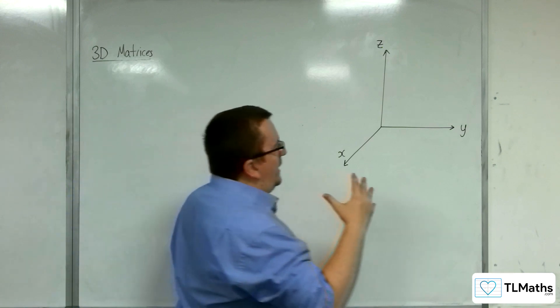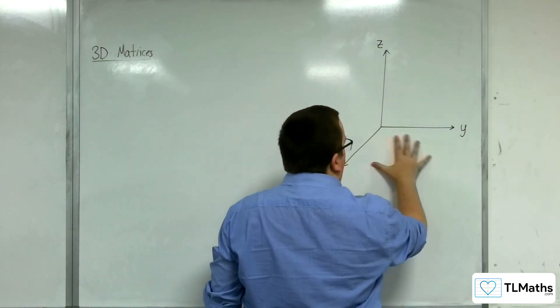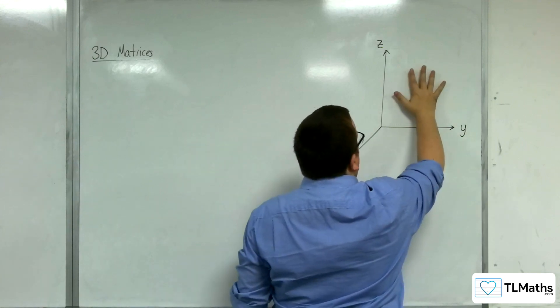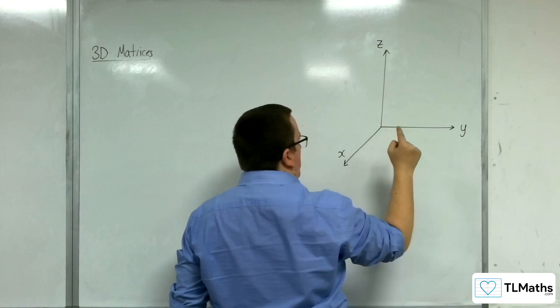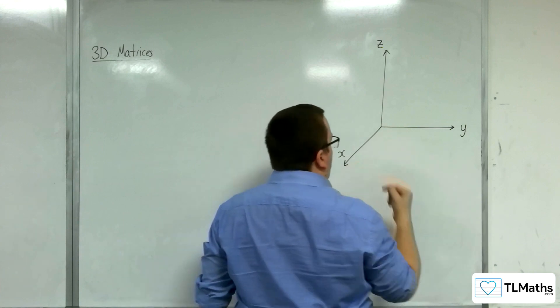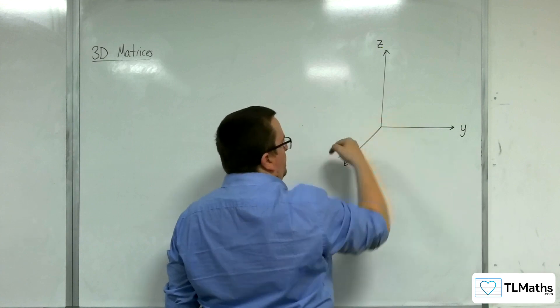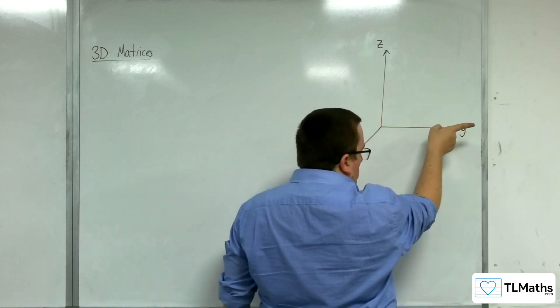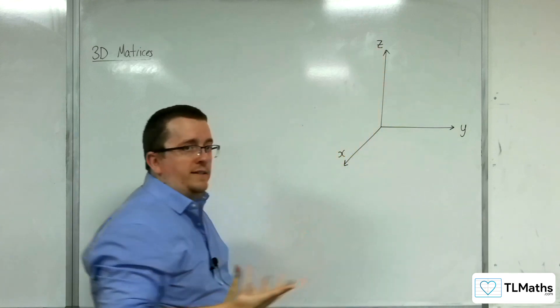What we're really looking at here is the corner of a room. This is the floor. This is one of the walls, and this is another one of the walls. Think of it looking into the corner of the room. We're going to label the x-axis effectively coming out of the board, y going to the right, and z as your vertical axis.